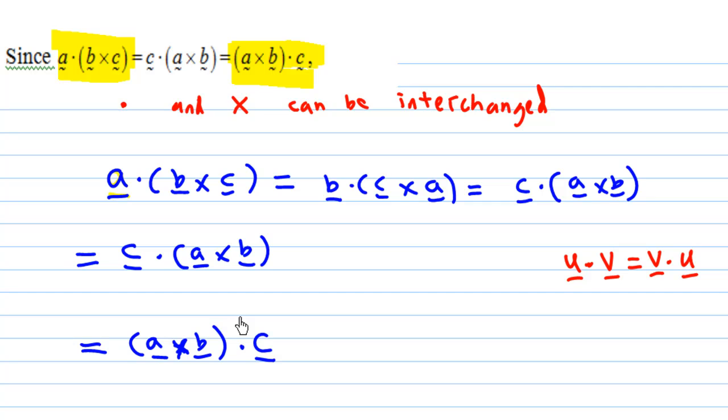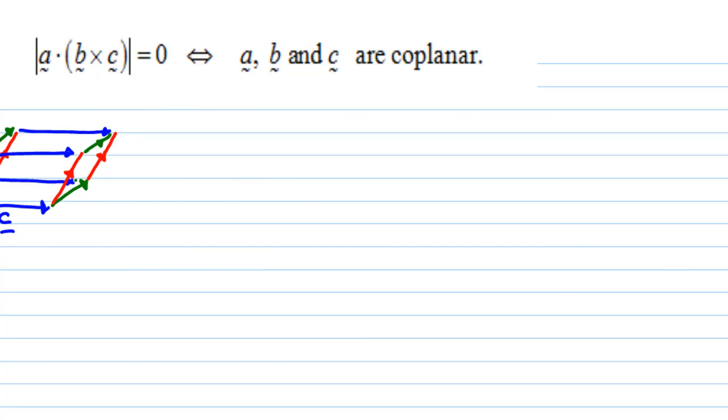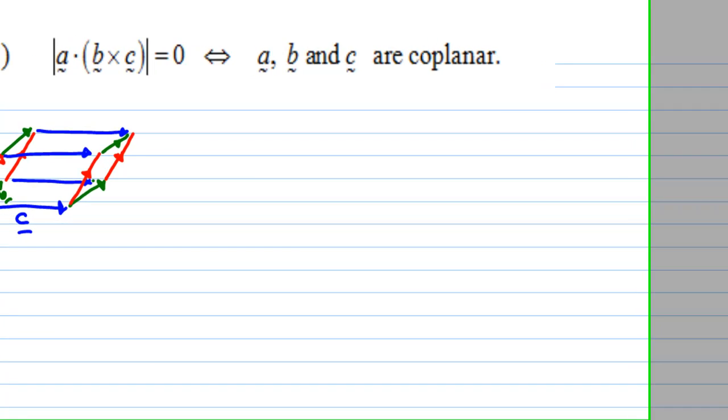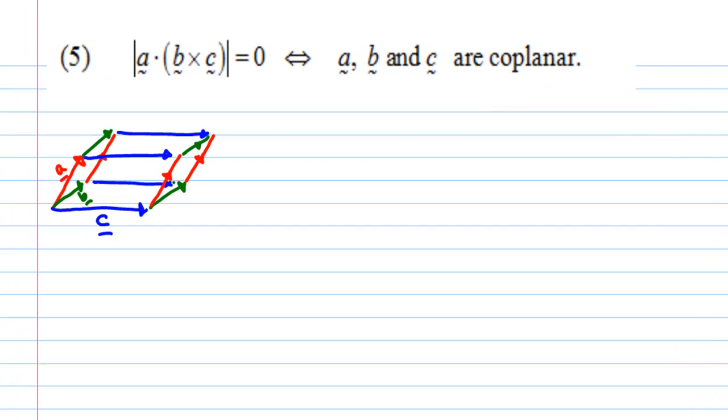And that is why end up interchanging the dot with cross and cross with dot. This is point number four. Point number five. If the magnitude of A dot B cross C equals zero, then A, B, C are coplanar.